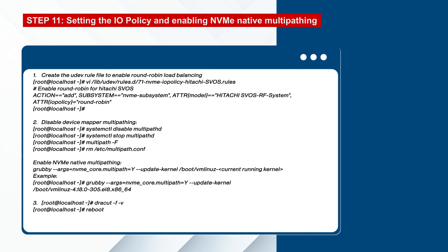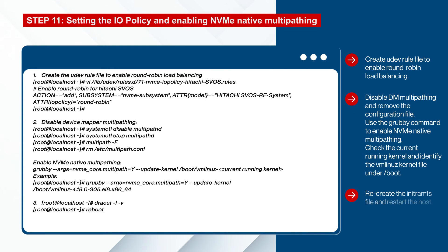Next we'll set up the IO policy and enable NVMe native multipathing. First, create a udev rule for the Hitachi VSP 5000 storage system NVM subsystem to enable round-robin load balancing for NVMe native multipathing. Disable device mapper multipathing and enable NVMe native multipathing. Recreate the initramfs file and restart the host so that the IO policy and NVMe native multipathing take effect.